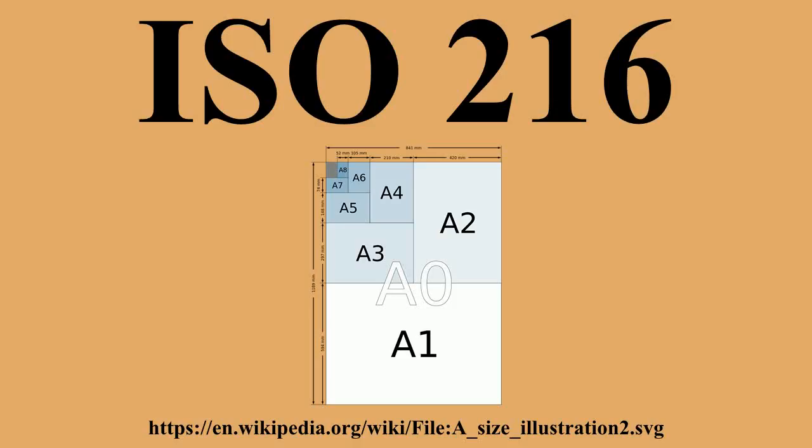The ISO 216 formats are organized around the ratio 1:√2. Two sheets next to each other together have the same ratio sideways. In scaled photocopying, for example, two A4 sheets reduced to A5 size fit exactly onto one A4 sheet, and an A4 sheet magnified fits onto an A3 sheet. In each case, there is neither waste nor want.